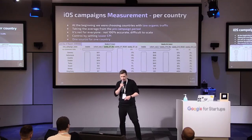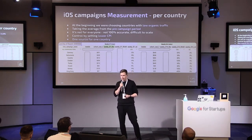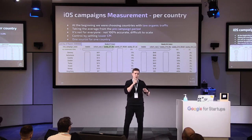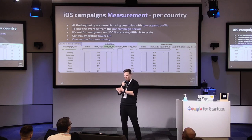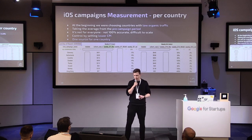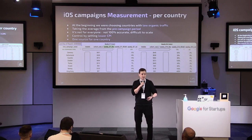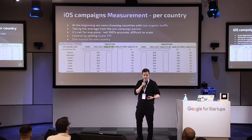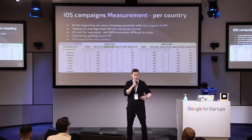We used the pre-campaign averages to deduct from all the numbers we had from the campaign. This method is not 100% accurate and it's difficult to scale. You can scale it per country, but you need to remember that one source should correspond to one country — otherwise it would be very hard to measure. This works well for a company like ours since we're not a really big company, so we scale by countries but not by source.